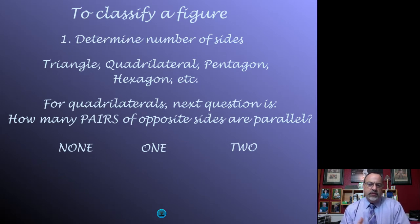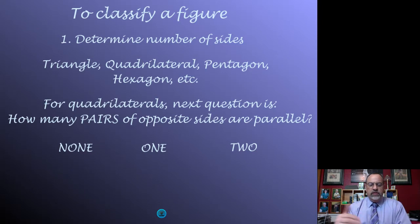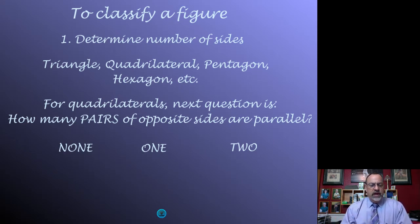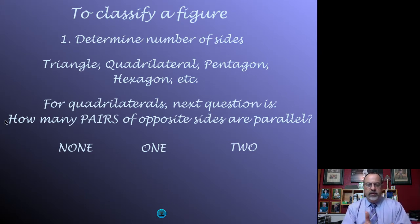The first question we ask when we look at a figure: how many sides does it have? That makes it a quadrilateral — which is more specific than just a figure. Once we knew it was a quadrilateral, we ask the next question: how many pairs of opposite sides are there that are parallel? Based upon that question, we could put it into one of three categories.